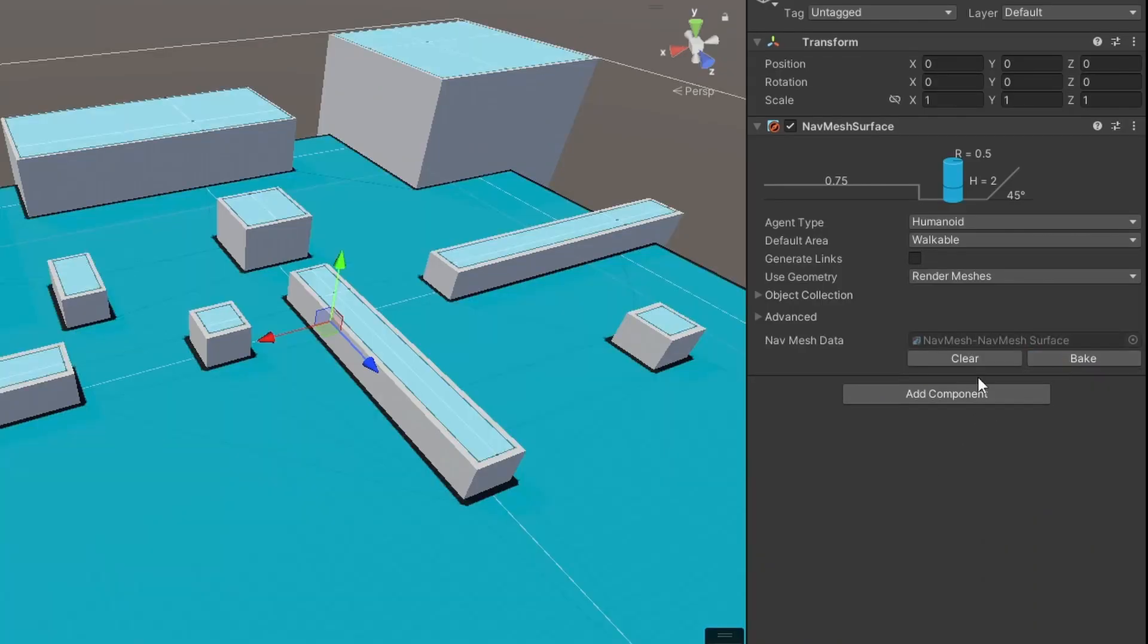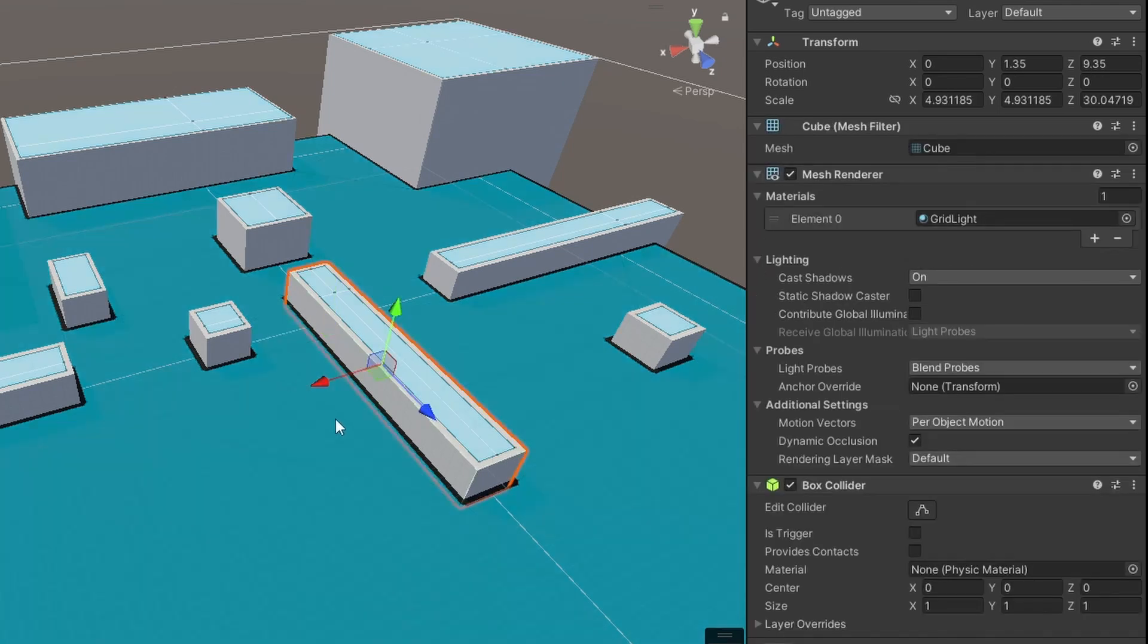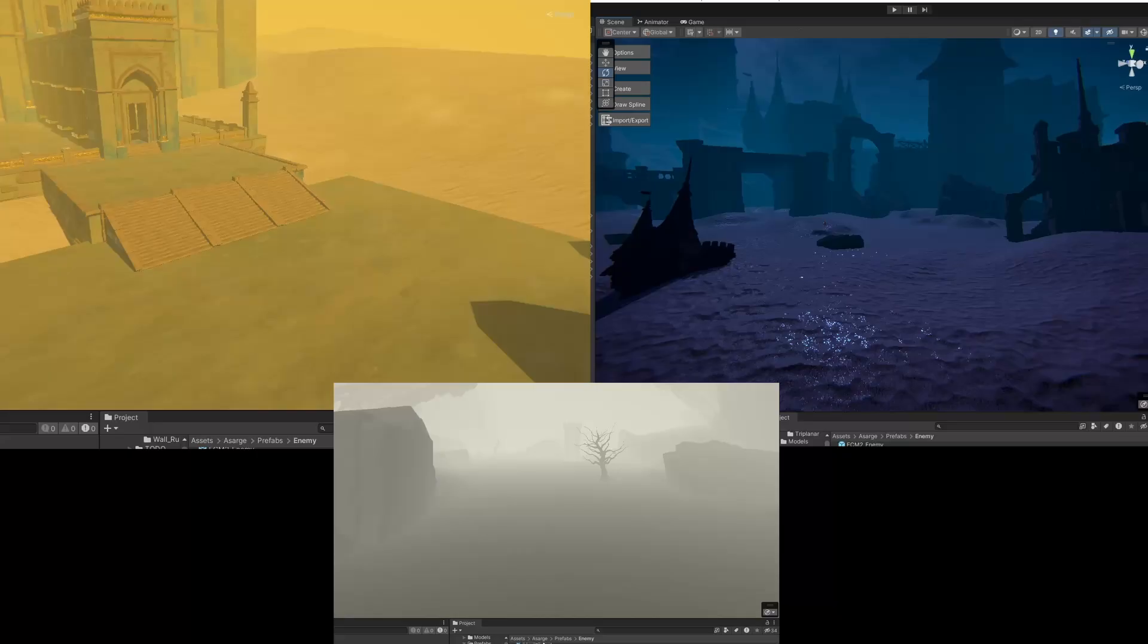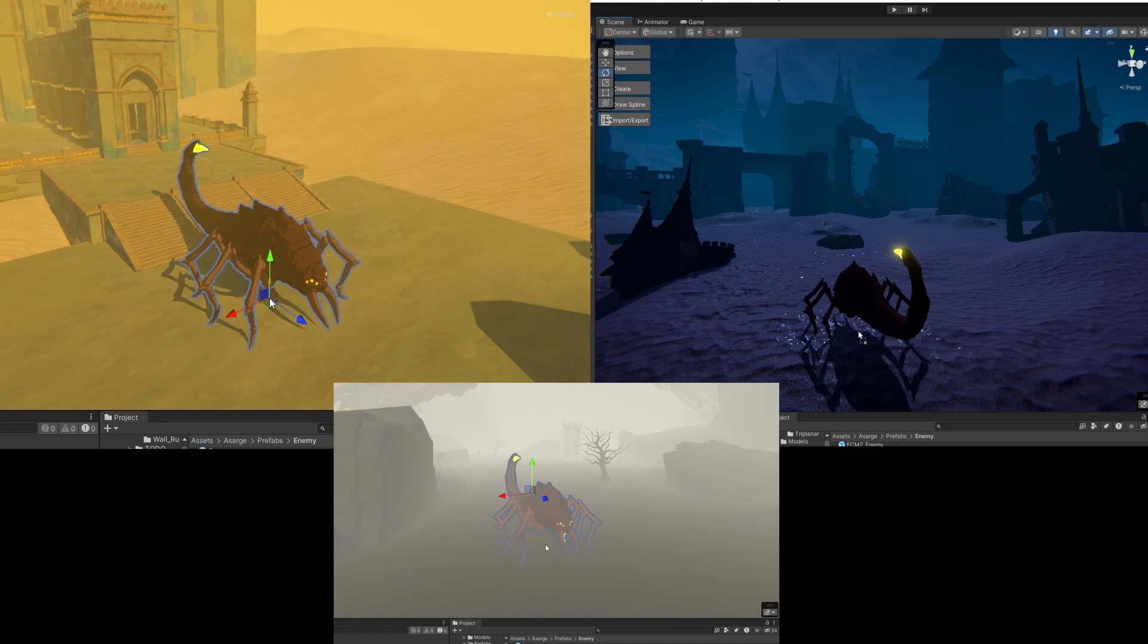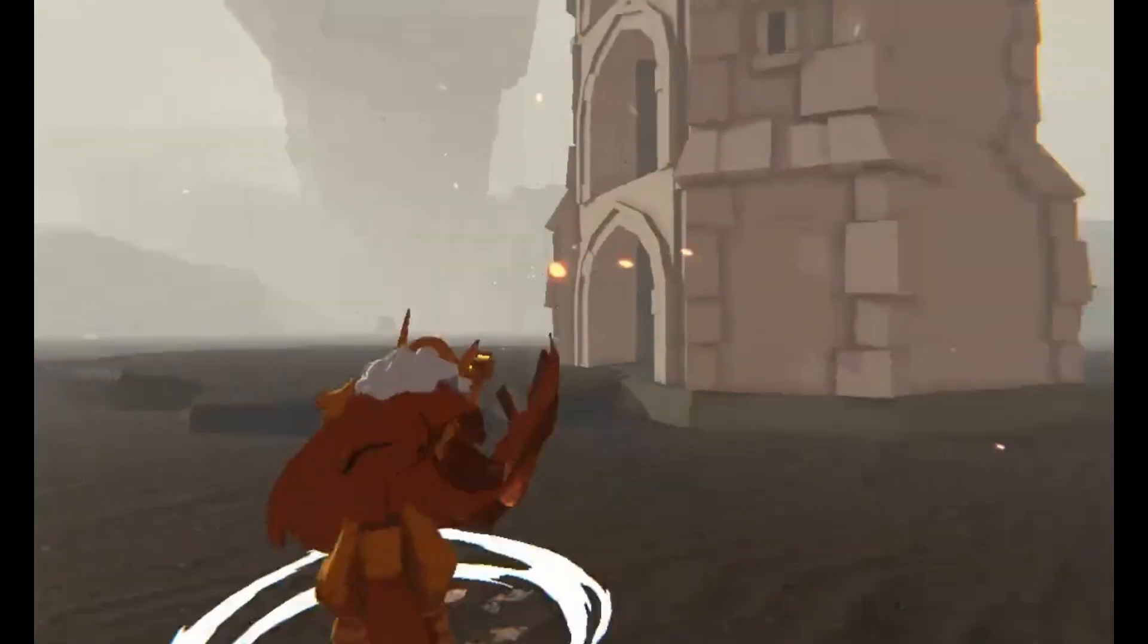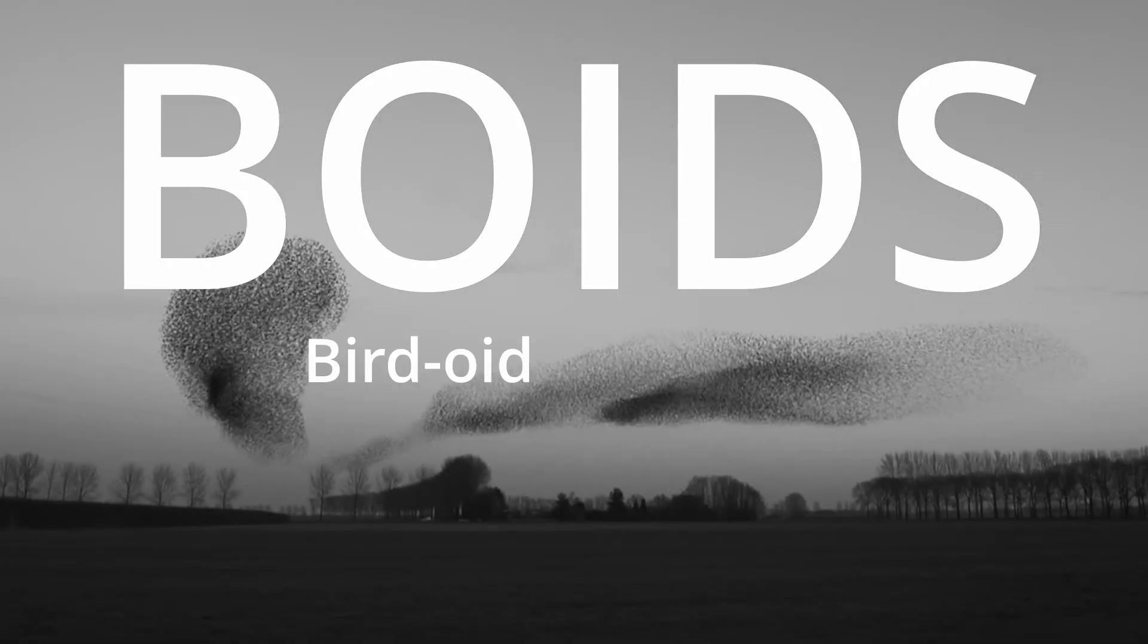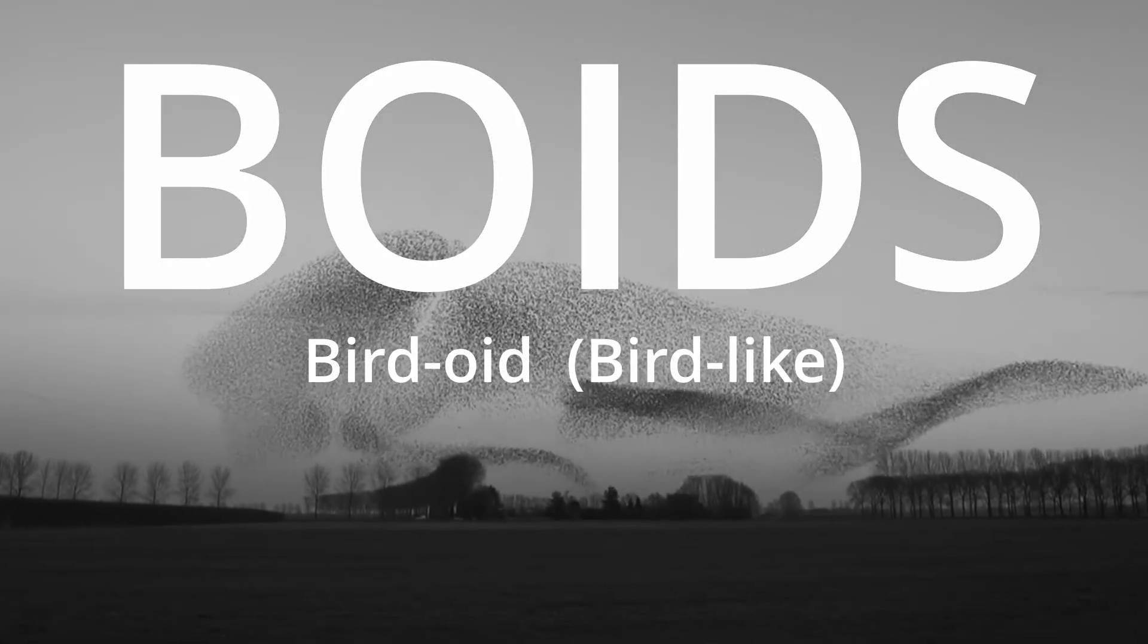Most pathfinding solutions require you to bake a nav mesh or some sort of environmental setup, but I wanted one where the enemy could be dropped in any scene and just work. I ended up using a similar setup to an artificial simulation movement behavior called Boids, meaning birdoid aka bird-like objects.